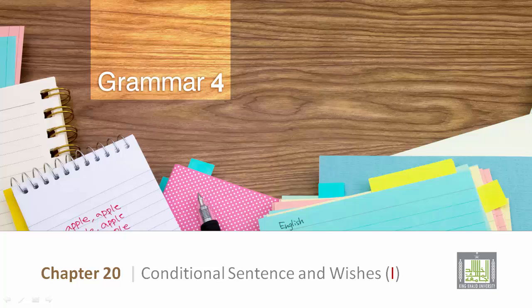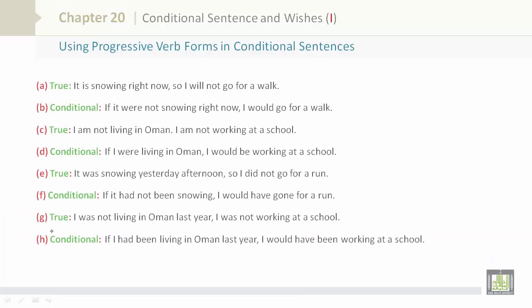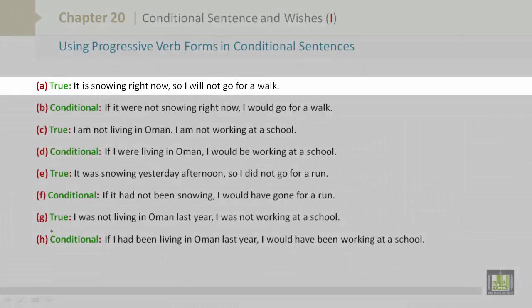Grammar 4, Chapter 20: Conditional Sentences and Wishes, Part 1. Using Progressive Verb Forms in Conditional Sentences.